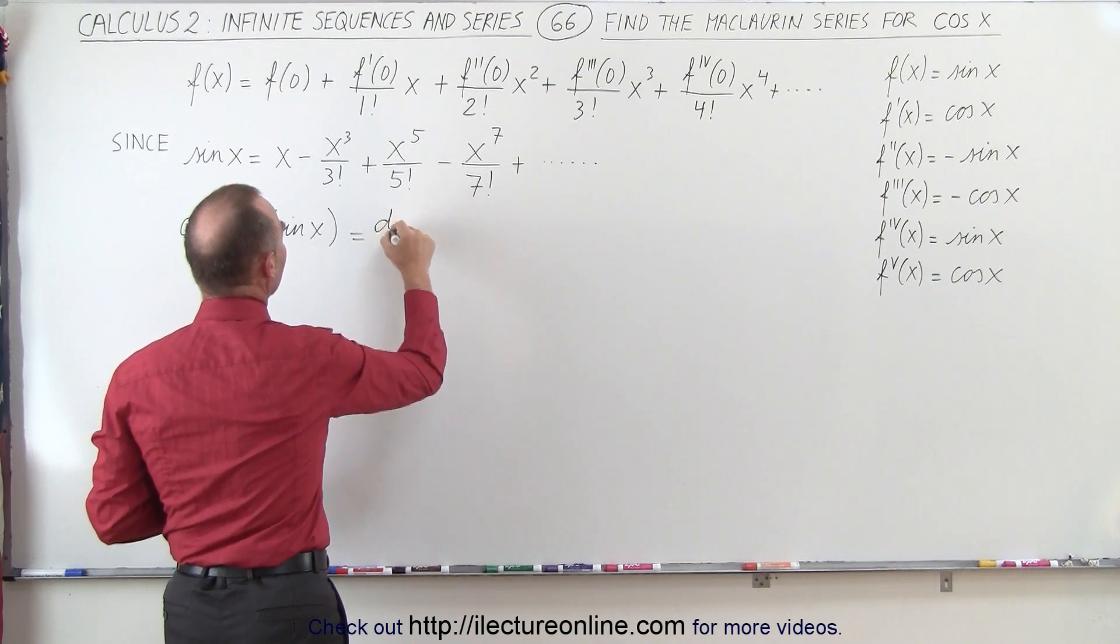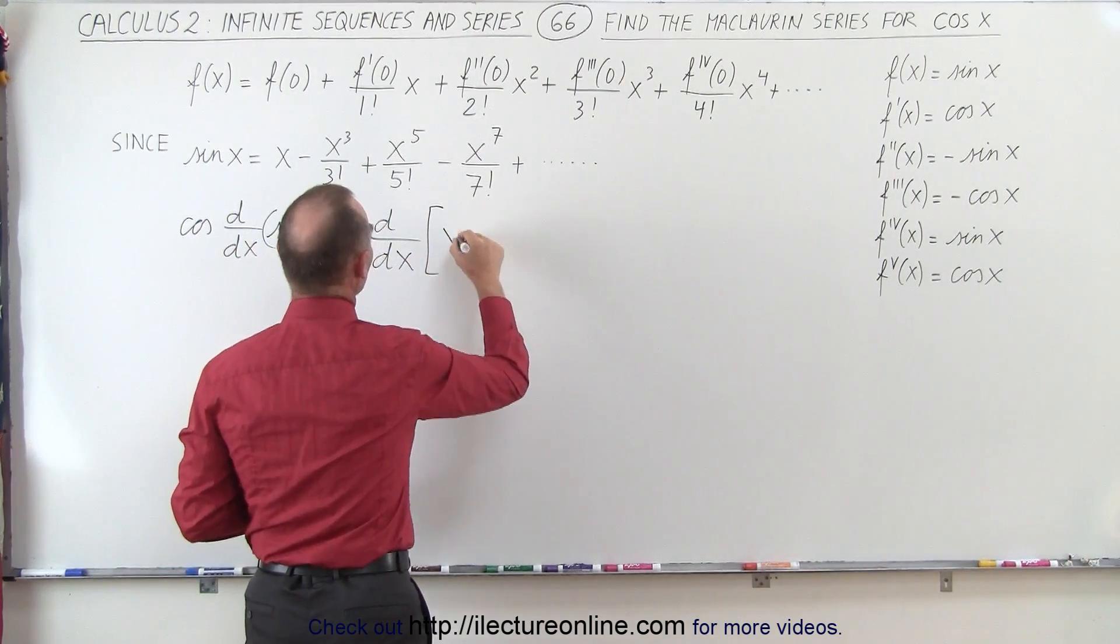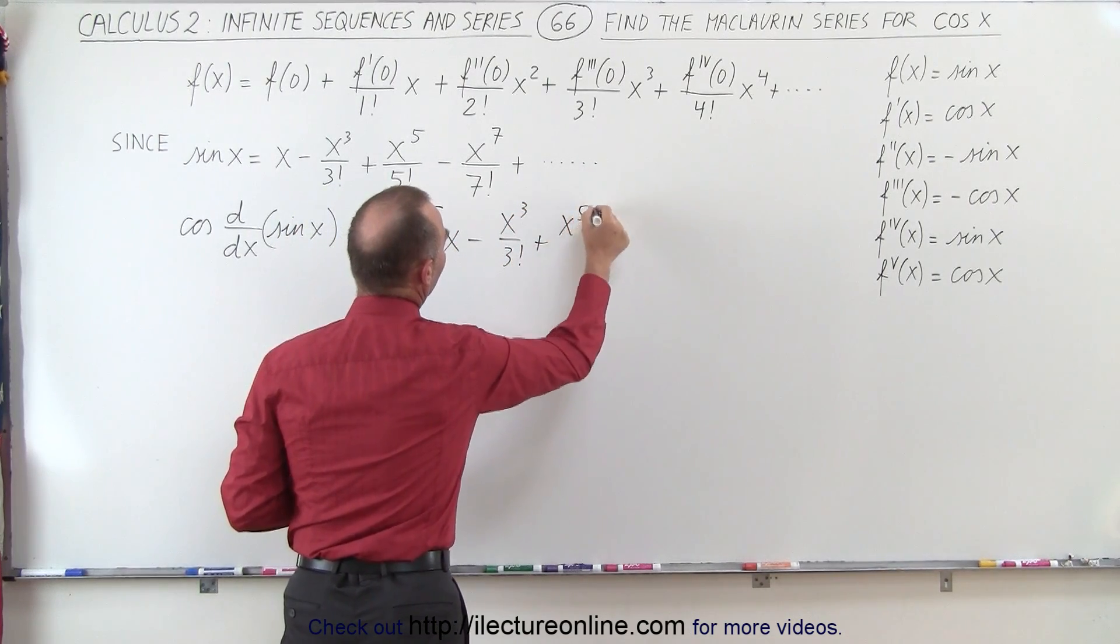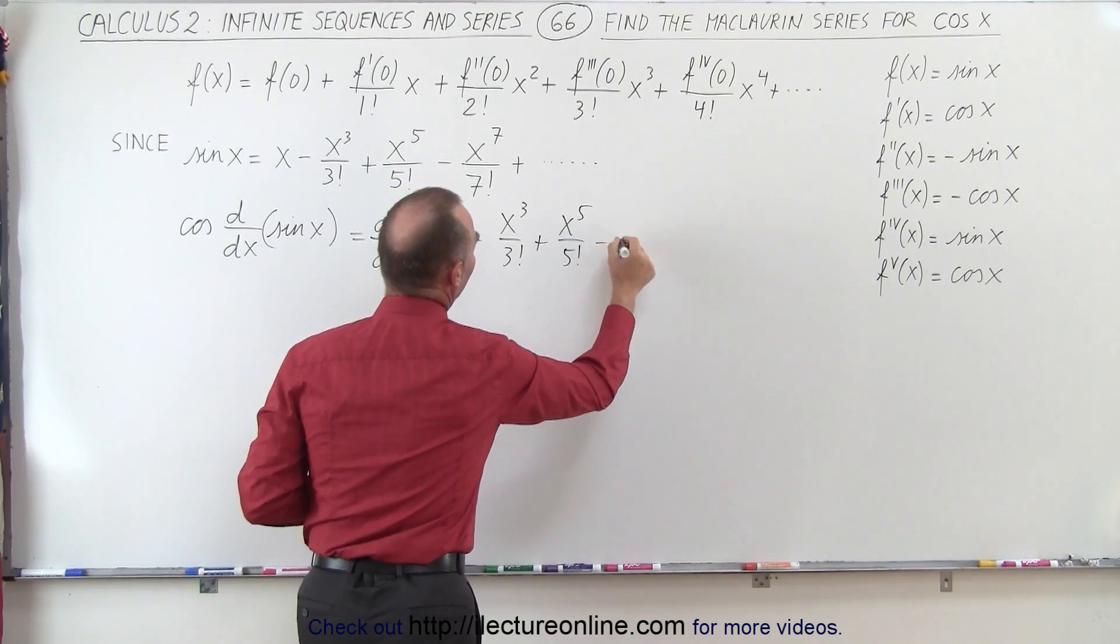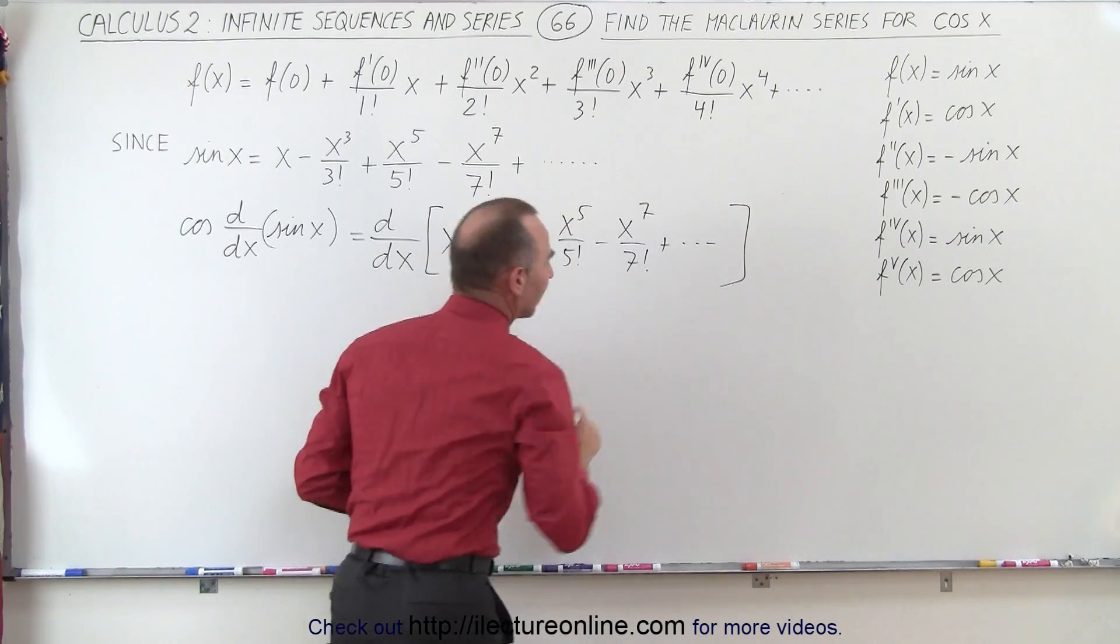So again, we're going to take the d/dx of the infinite series expression of the sine of x, which is x minus x³/3! plus x⁵/5! minus x⁷/7!. And I think you can see the pattern here.